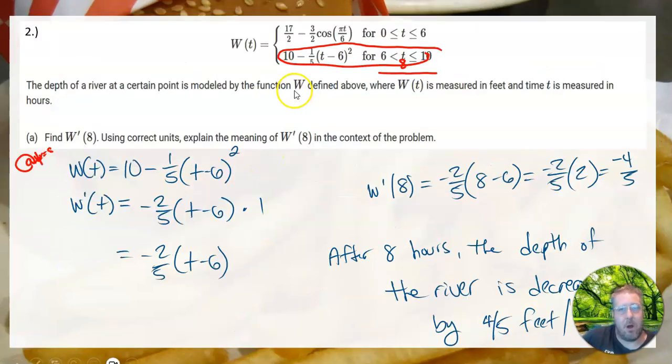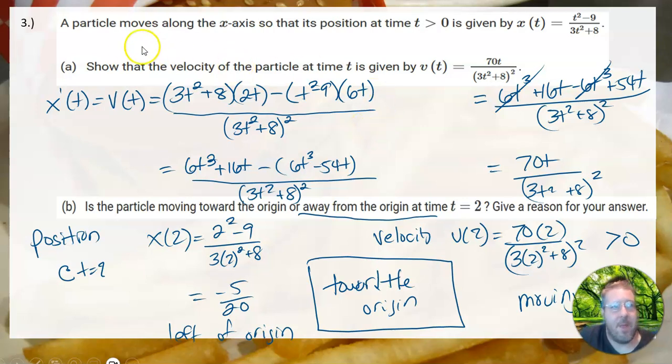All right, that was number two. Number three: a particle moves along the x-axis and its position at time t greater than zero is given by this equation. Show that the velocity of the particle equals this. Okay, so they like to give these questions quite a bit. They're giving you the answer—essentially they're saying, hey, this is the velocity, prove it.